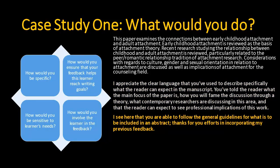From there, the next question — because I've been in a conversation with the student prior to the submission of this work — I might pick up where I left off with previous feedback in my answer to the second question, which is: how would you ensure that your feedback helps this learner reach writing goals? For example, if this student had not demonstrated competence in previous work, then I might praise the student for incorporating feedback from prior assignments. I might say something along the lines of: 'I see here that you were able to follow the general guidelines for what is to be included in an abstract.'